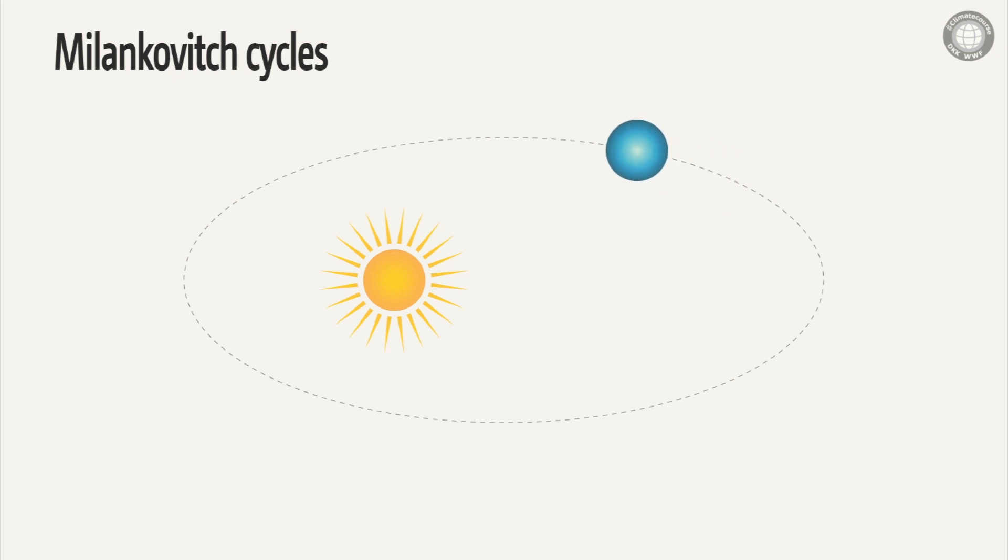You can see that the Earth travels in an elliptical orbit around the Sun. You can also see that the Earth axis is tilted with regard to its orbit, currently with an inclination of 23.5 degrees.